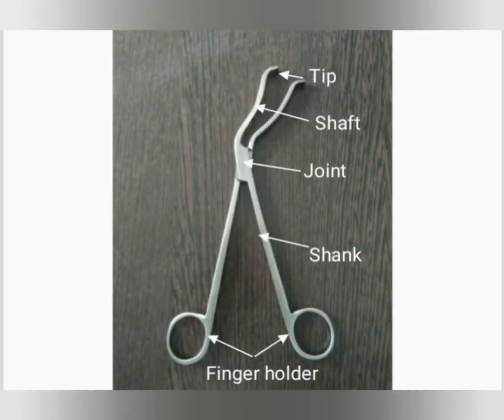Now let's discuss about the parts of the Cheatle forcep: finger holder, shank, joint, shaft, and tip with serration.